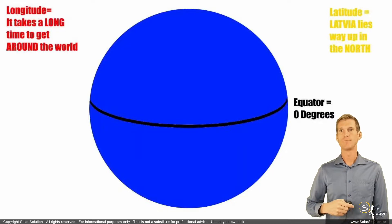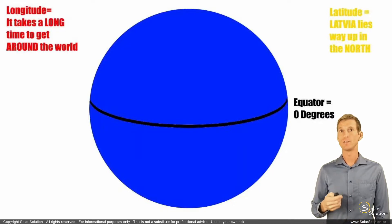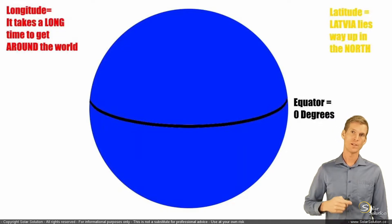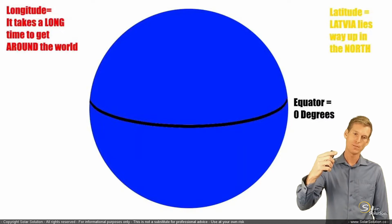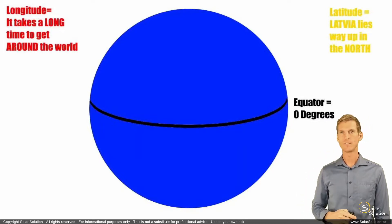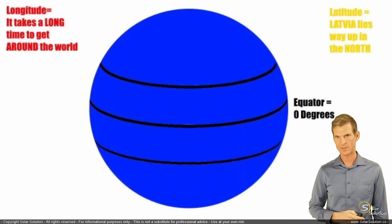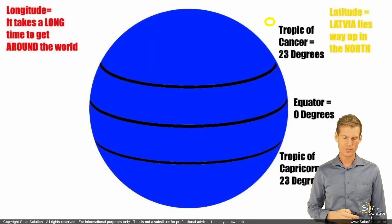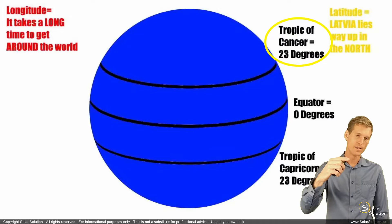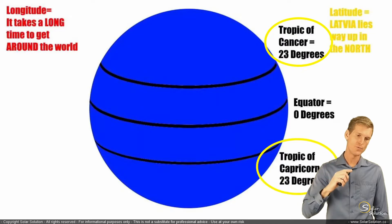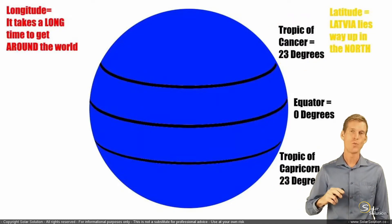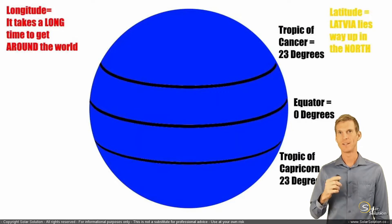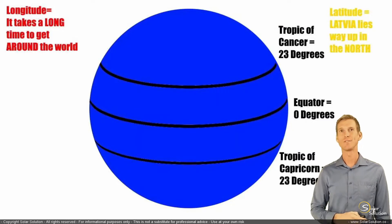There are two other latitudes that are relatively important as well, which are 23 degrees positive or 23 degrees negative, and they are the tropics — the Tropic of Cancer or the Tropic of Capricorn. When you are in between these two latitudes, plus 23 or minus 23, you are in the tropics, and the equator at 0 degrees is also inside the tropics.